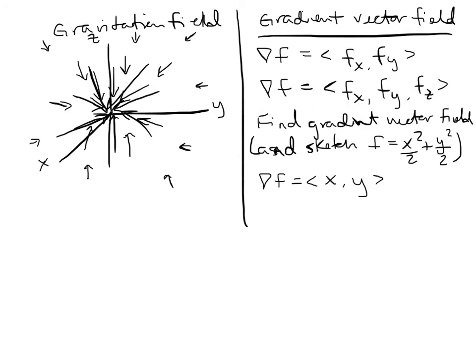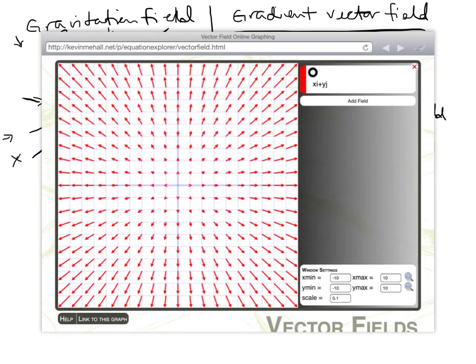For sketching, I'll import an image from software so you can see what a vector field actually looks like without a hand sketch. You can go to this website and enter the vector field — i for the x-component and j for the y-component. Notice that as x and y increase, the length of the vector increases in this field. It gives you a visual of what these things actually look like, because by hand we're not going to draw out that many vectors.